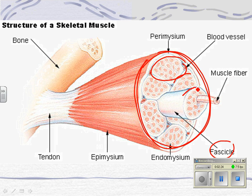Inside the fascicle are bundles of muscle fibers, and a muscle fiber is a muscle cell. So when you're making your whole muscle bigger by working out or lifting weights, you're actually increasing the size of each cell. And if you increase the size of each cell, you increase the size of the whole muscle.